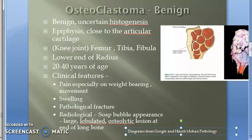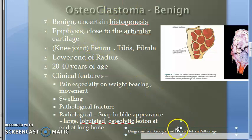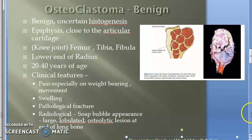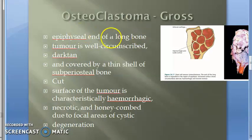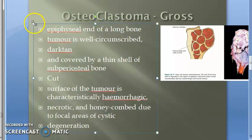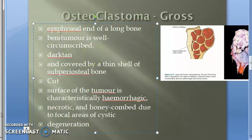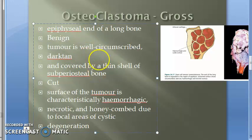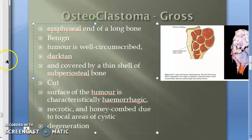Welcome guys. In the last video we started with the osteoclastoma introduction and saw the clinical features. Now we will look at the gross appearance. You already know it affects the epiphyseal end of the long bone. Because it is a benign condition, the tumor will be well circumscribed. The color is dark tan.